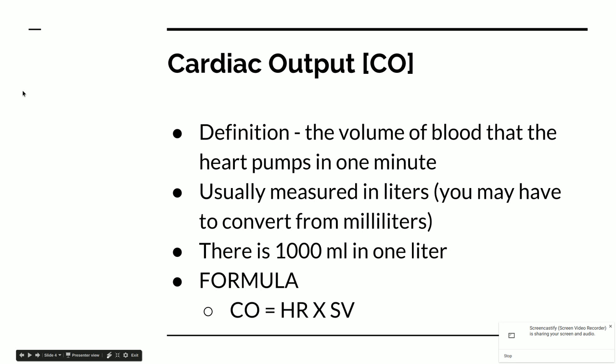Cardiac output, CO, is the volume of blood that the heart pumps in one minute. It's usually measured in liters, so you'll likely have to convert from milliliters. The stroke volume is given in milliliters, but cardiac output is given in liters. Remember, there are 1,000 milliliters in one liter, so divide your milliliter value by 1,000 to convert. The formula is cardiac output equals heart rate times stroke volume.